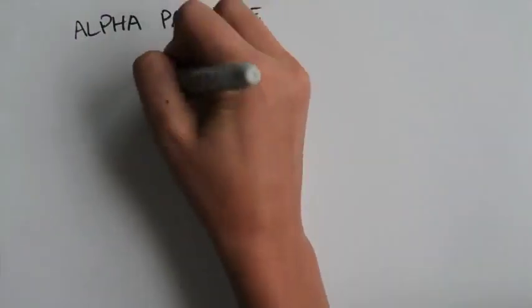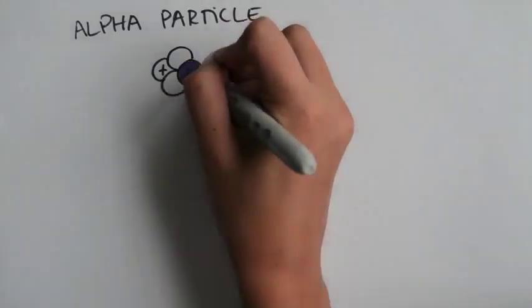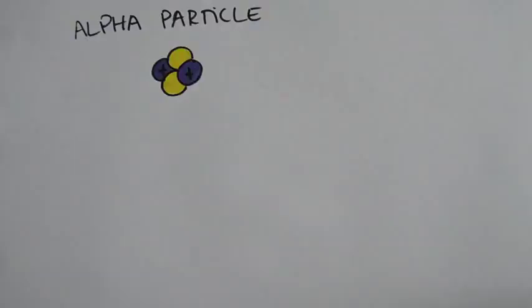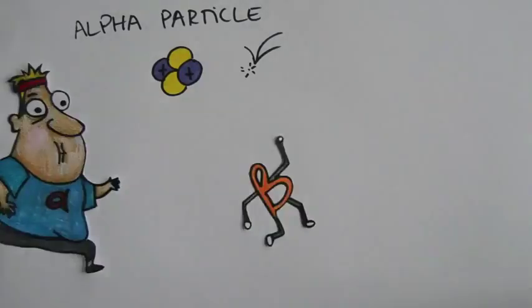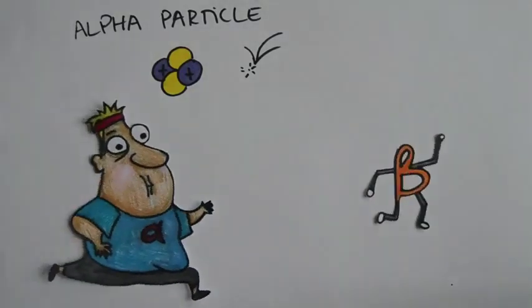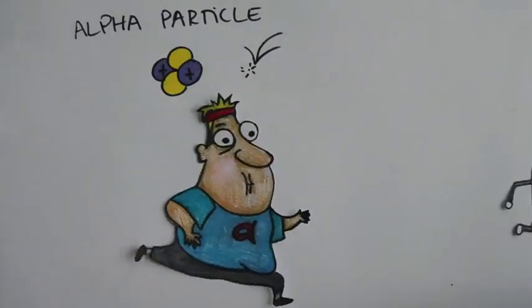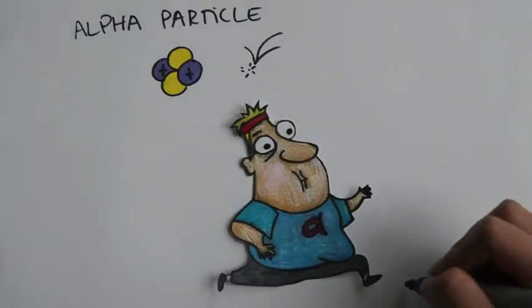An alpha particle is two neutrons and two protons stuck together, also known as a helium nucleus. This is 8,000 times more massive than a beta particle, therefore slower and can only travel a few centimeters in air. So when an alpha particle is emitted, the atom changes into an atom with two less protons.